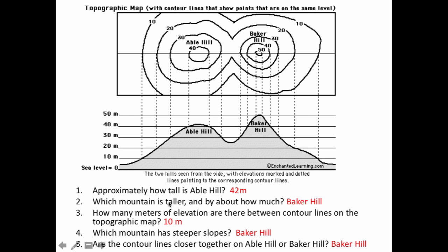Which one is steeper? That goes back to looking at it. Remember, to figure out steepness, the closer the contour lines are, the steeper the hill. So even though Baker has this really gradual part right here, on the south side, it is extremely steep.